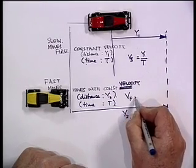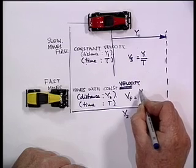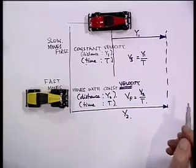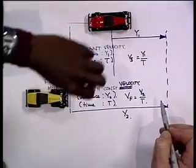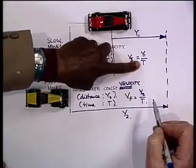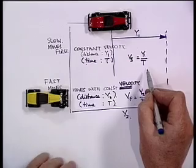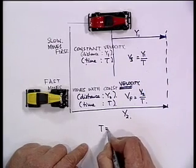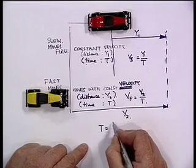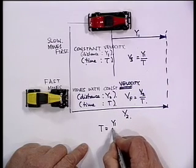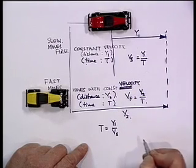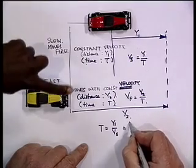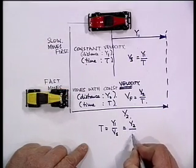And the velocity of the fast car is y2 over t. Then we manipulate this — we change it to make t the subject of the formula. So now we say they're both taking the same length of time, so t is equal to y1 over v-slow, and that's also equal to y2 over v-fast.